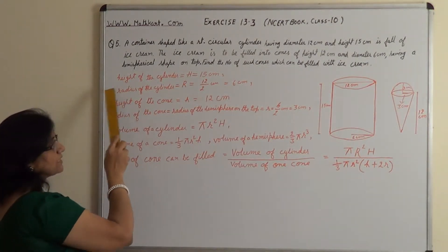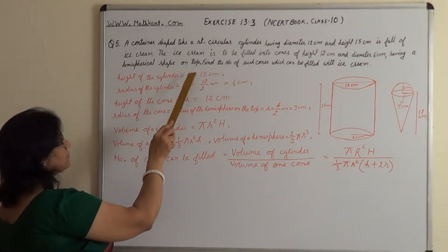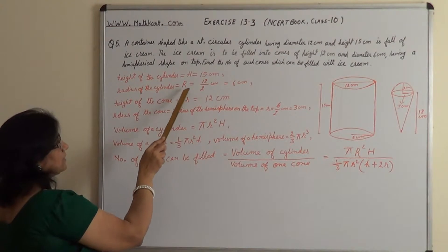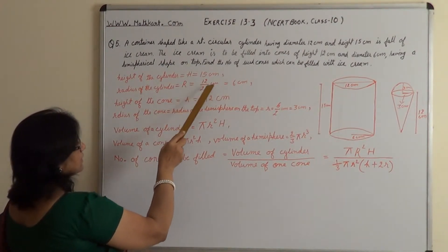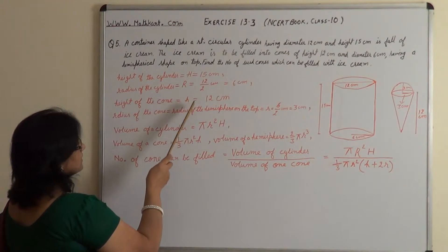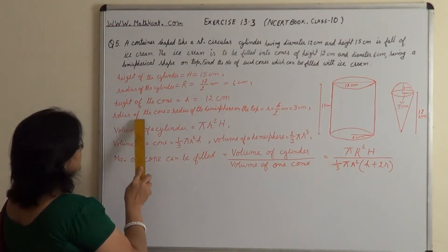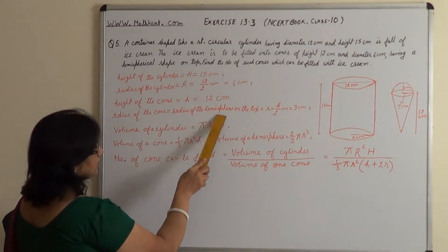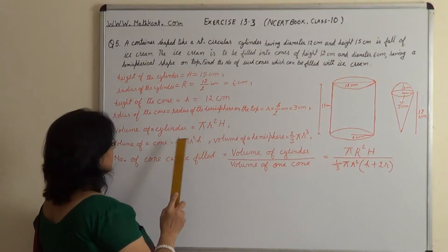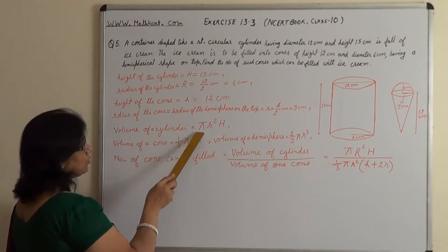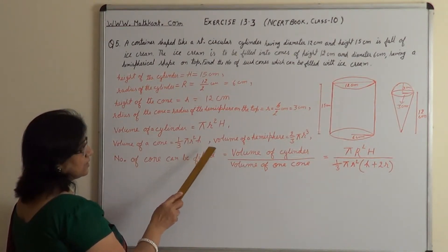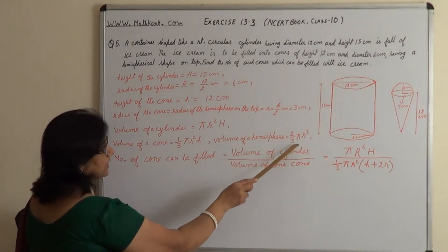First we will write all the measurements. Height of the cylinder, denoted by capital H, is 15 cm. Radius of the cylinder, denoted by capital R, is 12 upon 2, equal to 6 cm. Height of the cone, denoted by small h, is 12 cm. Radius of the cone, equal to the radius of the hemisphere on top, denoted by small r, is 3 cm. Volume of the cylinder is π R² H. Volume of a cone is (1/3) π r² h. Volume of a hemisphere is (2/3) π r³.